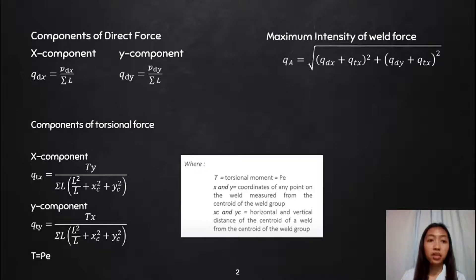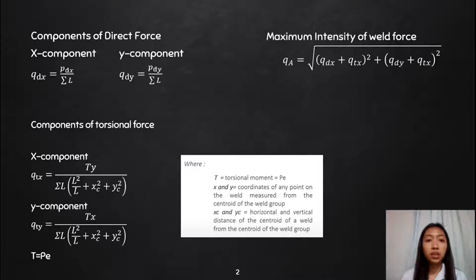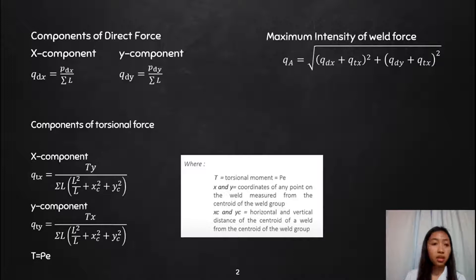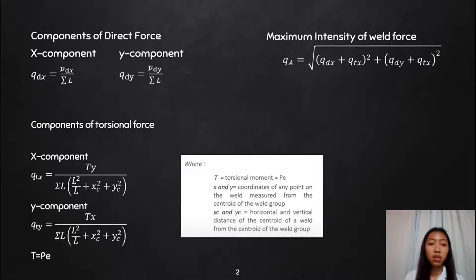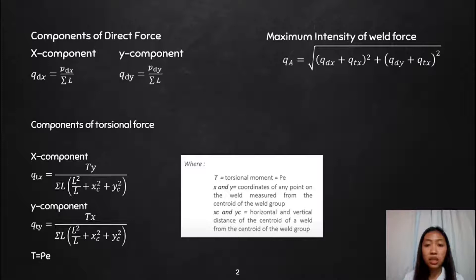For the components of direct force, meron tayong x and y component. The formula for the x-component is q_dx = P × d_x all over the summation of length. And for the y-component, q_dy = P × d_y all over the summation of length. Para naman sa pag-compute ng torsional force, the formula for the x-component is q_tx = T × y all over the summation of L × (L² / L + x_c² + y_c²). And for the y-component, q_ty = T × x all over the summation of length × (L² / L + x_c² + y_c²). For the torsional moment, T = P × e, which is the eccentric distance.